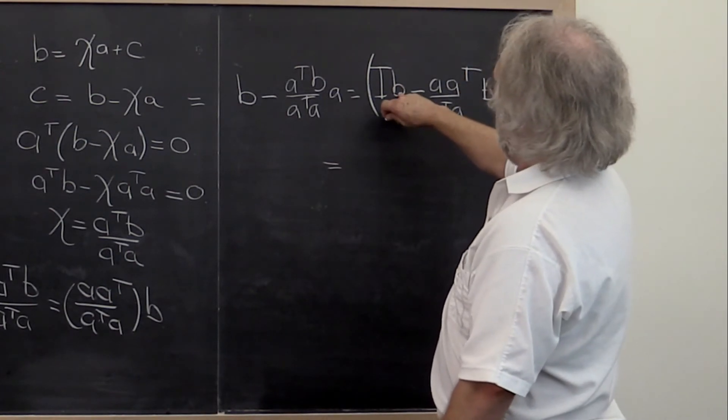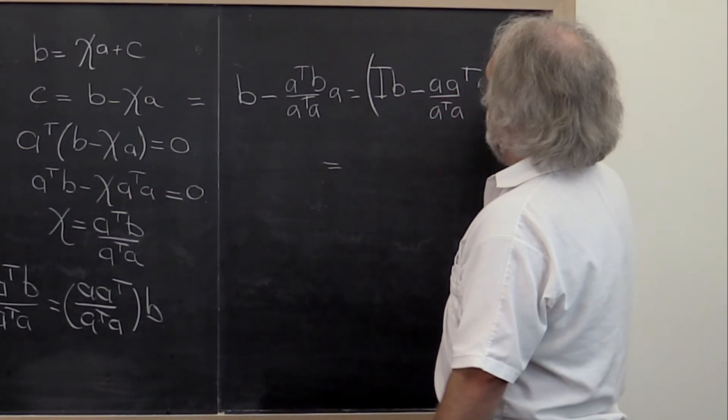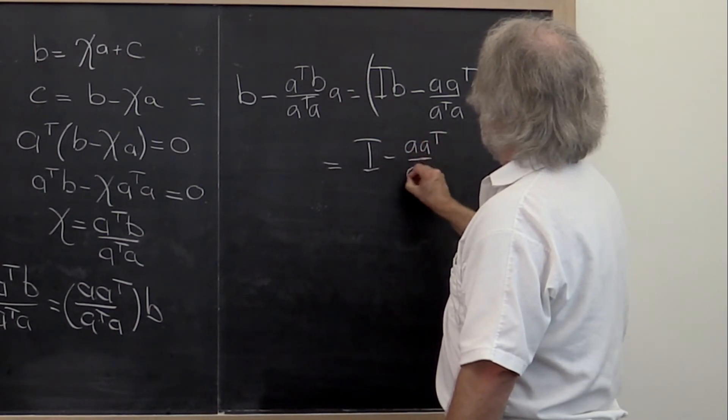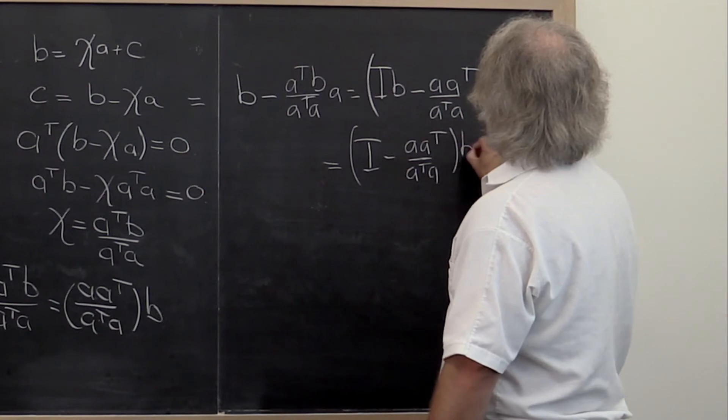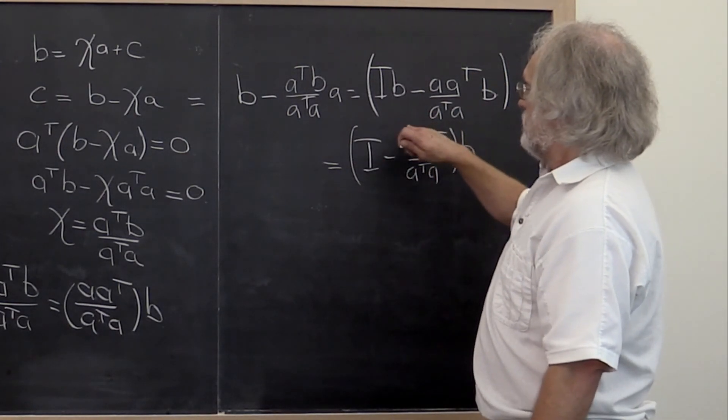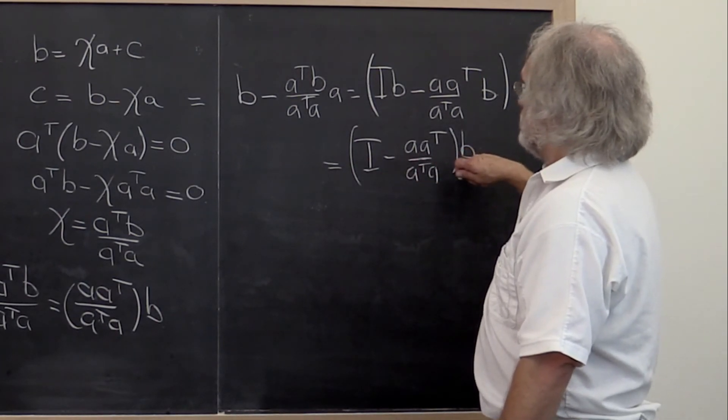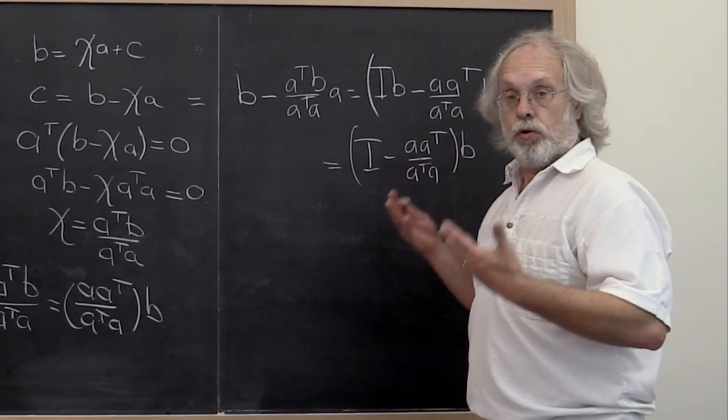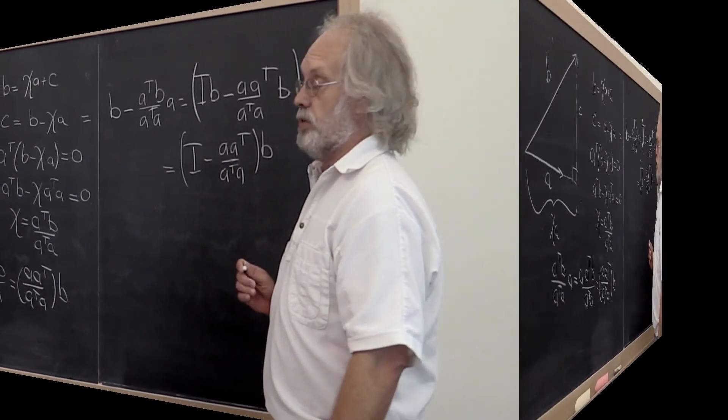And then we can bring B out. And what we have now is the matrix that when applied to a vector B tells you what the component of that vector B is orthogonal to vector A.